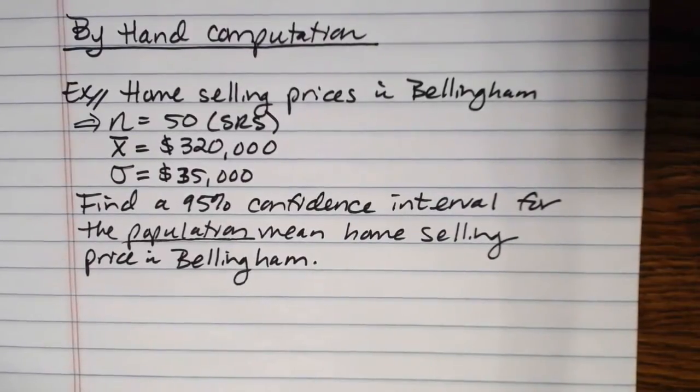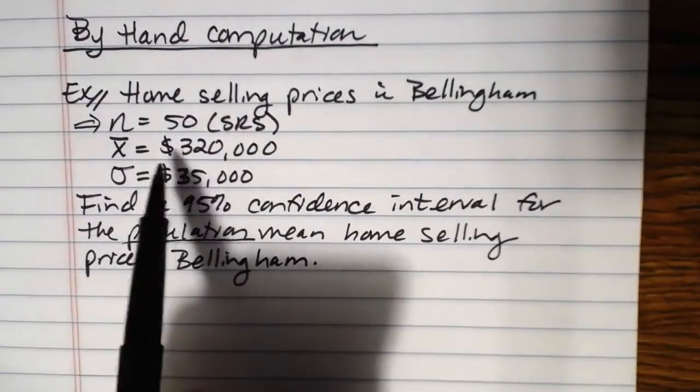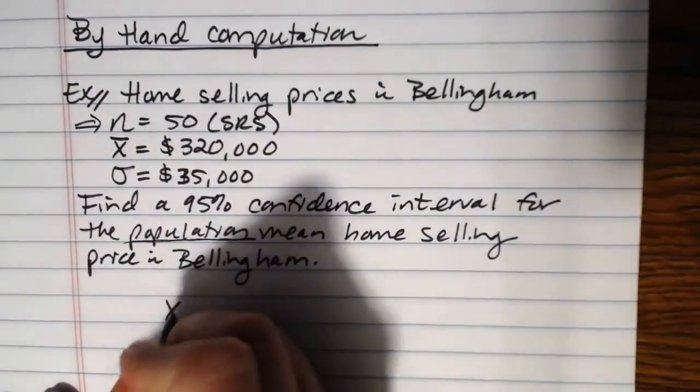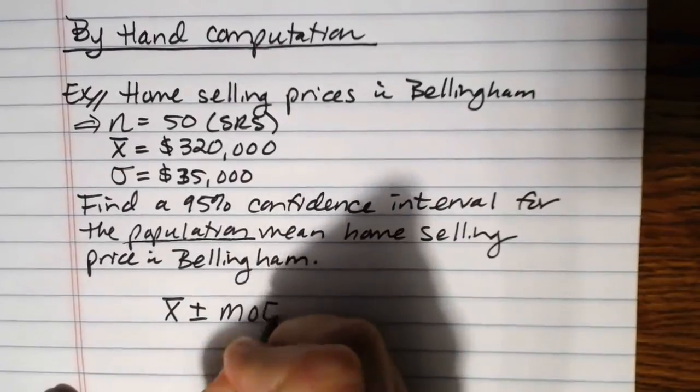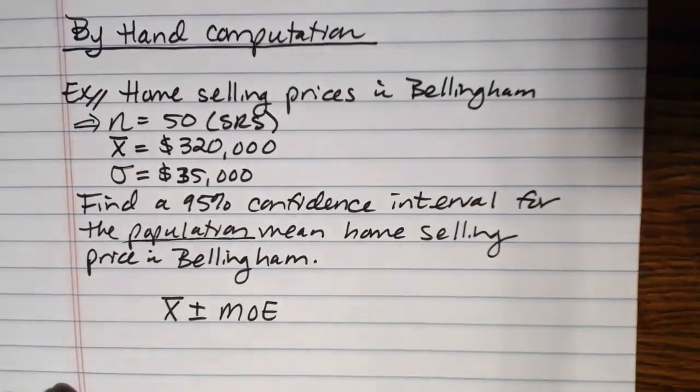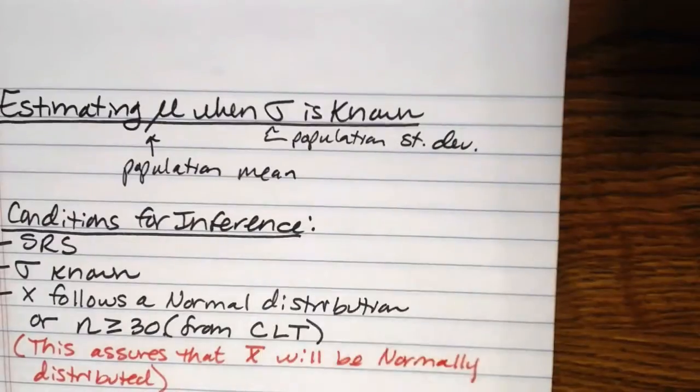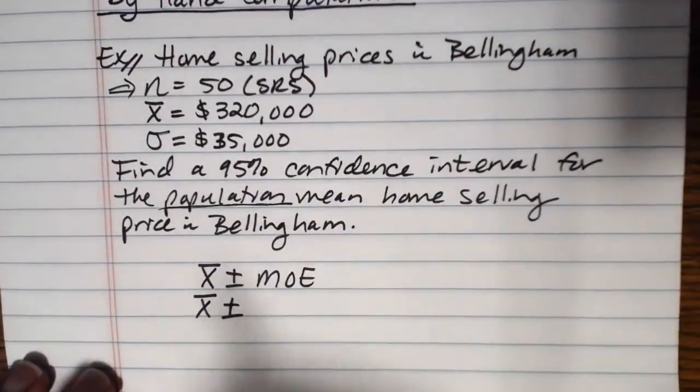Now, what the by hand computation helps us do is to determine that margin of error. We already know our starting point, it's $320,000. Now, I need to figure out what's that little bit of wiggle room, that margin of error that I'm going to add and subtract. So, I will show you the formula for doing this. Basically, you're going to take your X bar plus or minus your margin of error. And the formula for margin of error, if you're estimating mu when sigma is known, and you're going to do this by hand, here's the by hand formula.